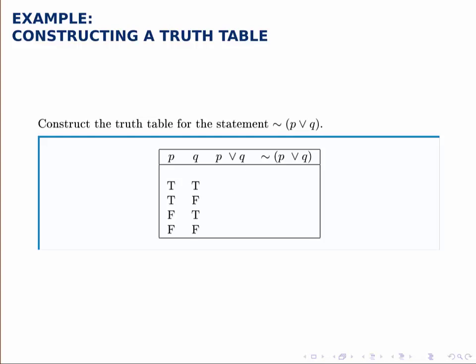To do P or Q, remember that or is true as long as either of them is true or if both of them are true. So as long as at least one of them is true, P or Q is true.